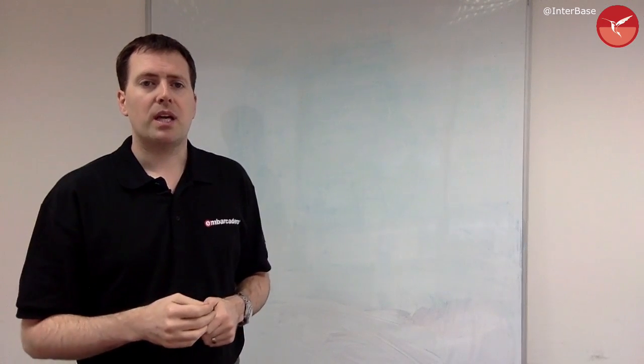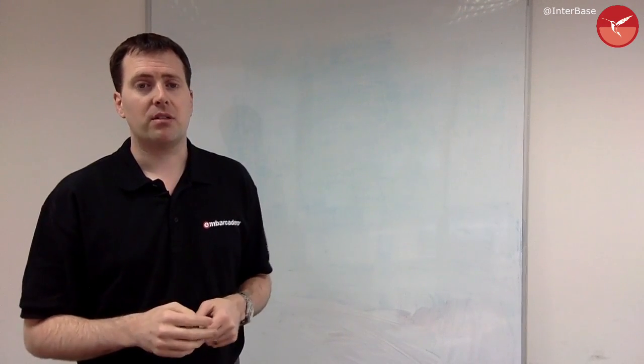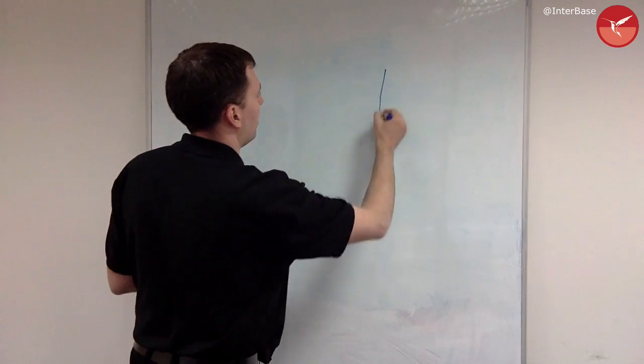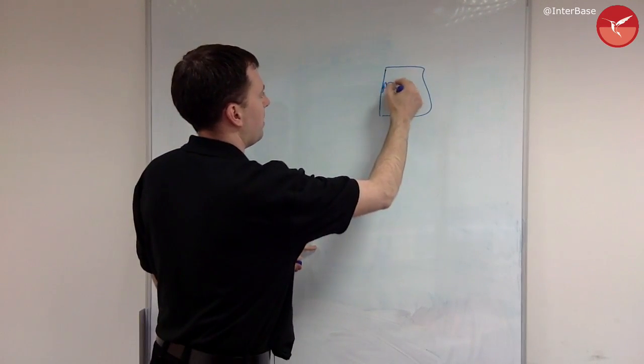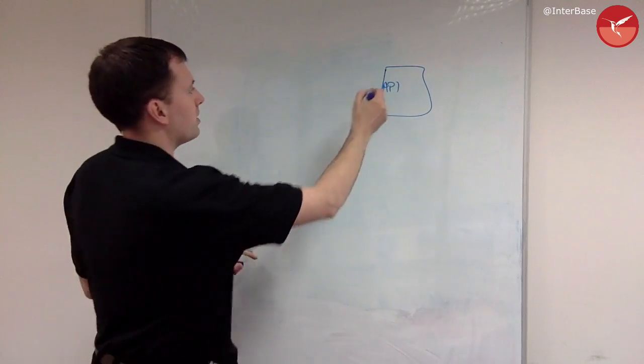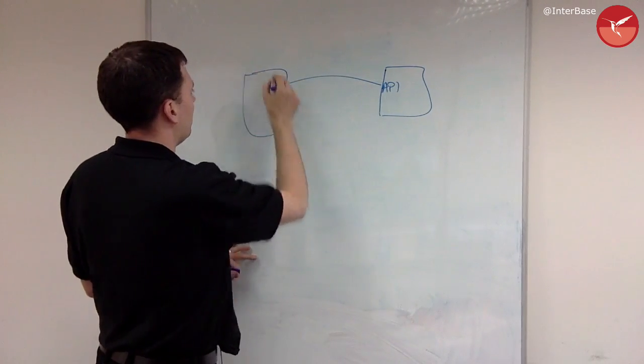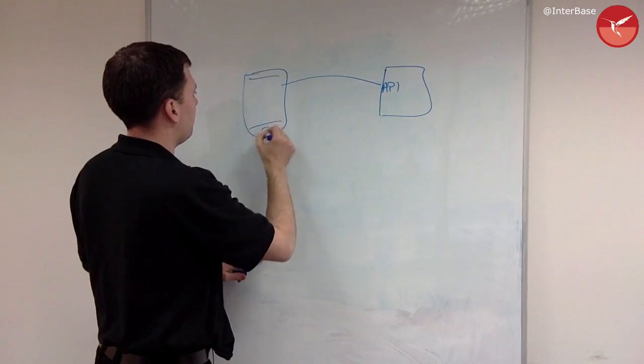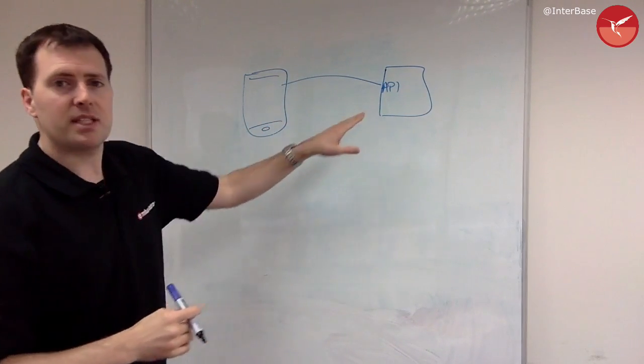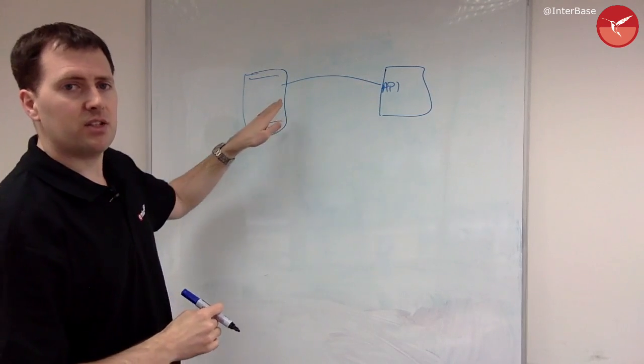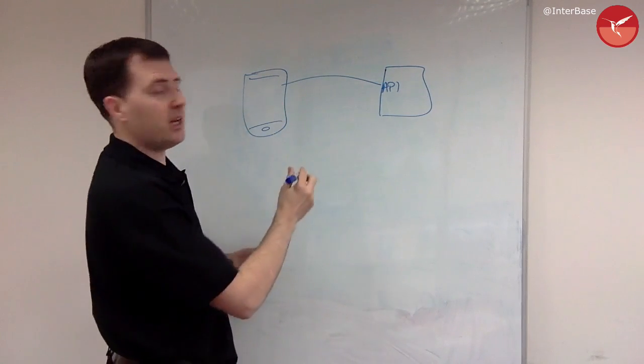Typically when we're developing a mobile application, we're going to have our central system and a set of APIs that we're going to be calling that's going to be serving data out to our mobile devices. Now that data, to get it safely from the server to the mobile device, needs to be encrypted.